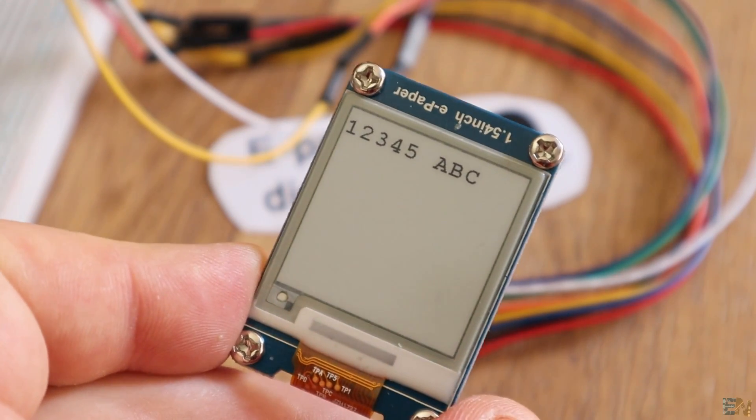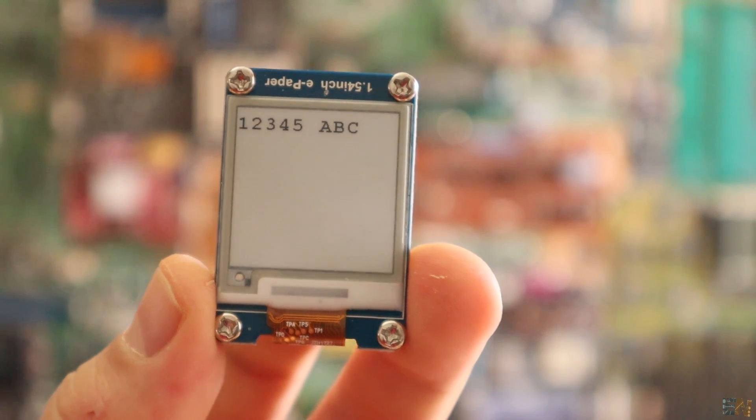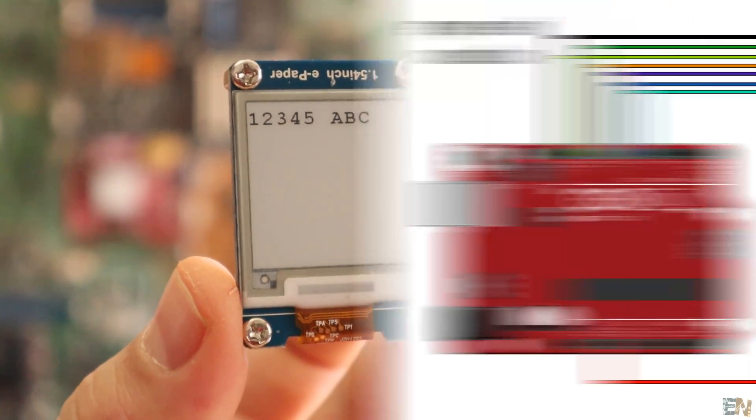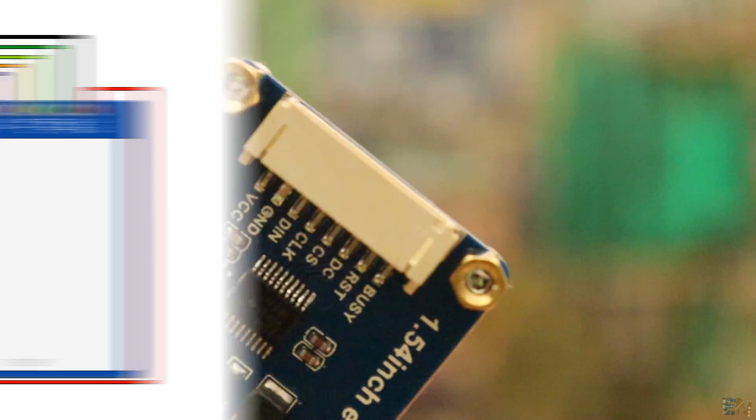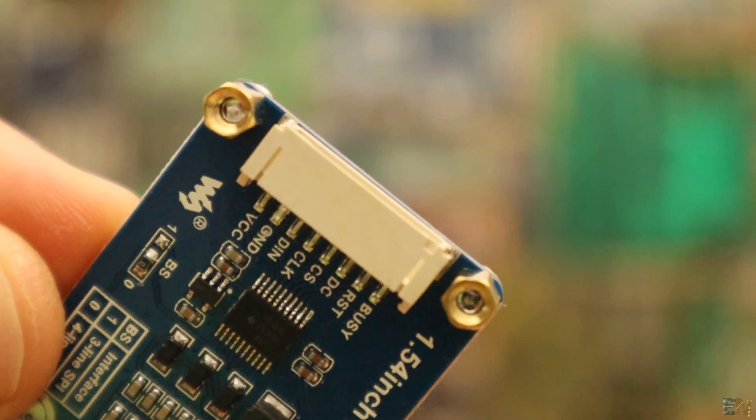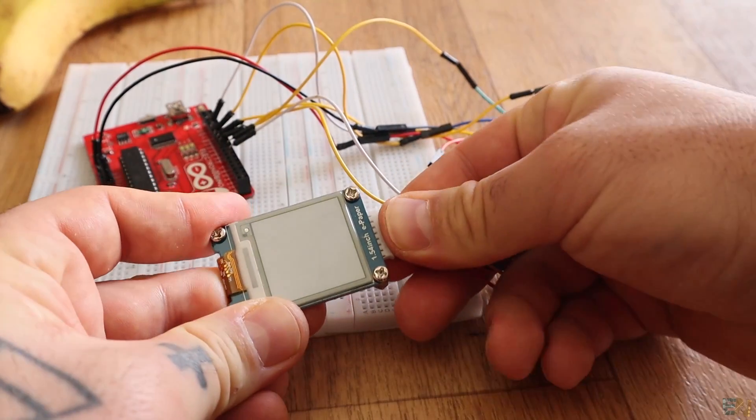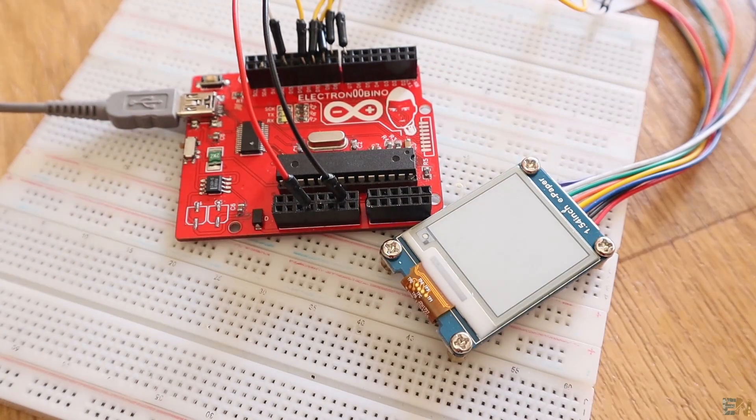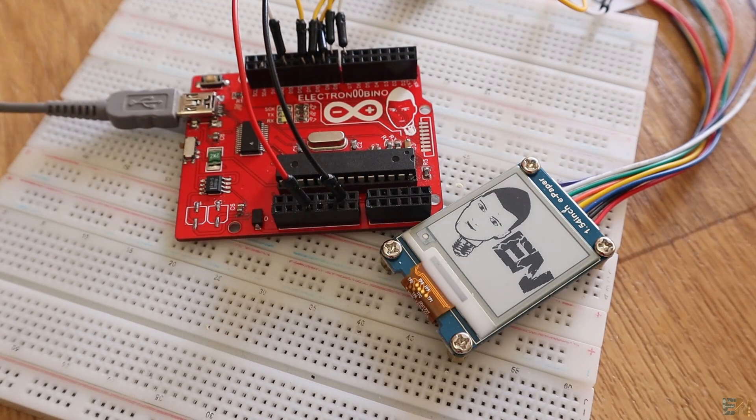So once you refresh the new image, you could disconnect the power supply in order to save some power. Make these connections to the Arduino. It also uses an SPI serial communication, so connect the data pins. Download the next code and the libraries from below, called ePaper example.